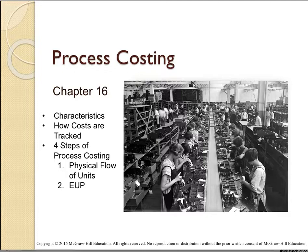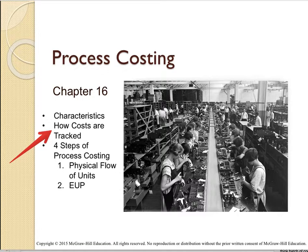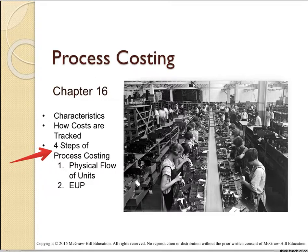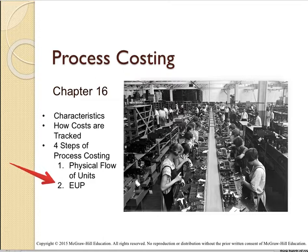Welcome to this lecture series on chapter 16 on process costing. In this lecture I want to cover first the characteristics of process costing and what types of companies and products would use it, how the costs are tracked and how it's different from job order costing from chapter 15, and then an introduction to the four steps of process costing — specifically steps one and two: the physical flow of units and equivalent units of production, shortened to EUP.